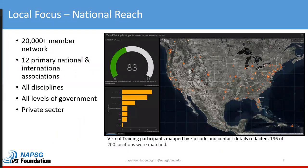Our reach is primarily national with about 20,000 members. You can see from the map here who's on the webinar today, at least those we were able to map based on zip code. It's a pretty good cross section across the country — a mix of disciplines, levels of government, and the private sector.